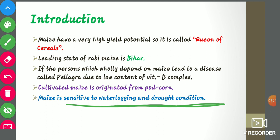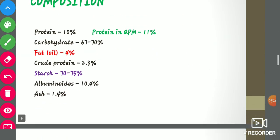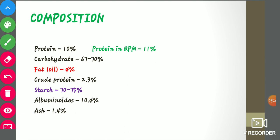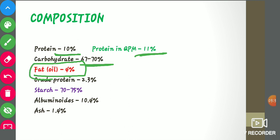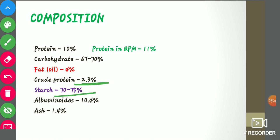Coming to its composition: maize comprises protein at 10 percent, and in quality protein maize it is 11 percent. Carbohydrate content is 67 to 70 percent, oil is 4 percent, crude fiber is 2.3 percent, starch is 70 to 75 percent, albuminoids are 10.4 percent, and ash content is 1.4 percent.